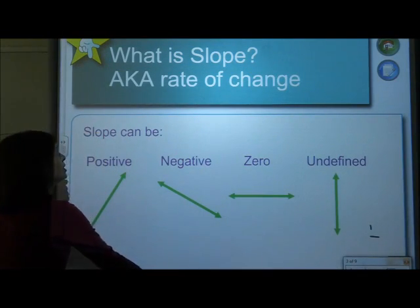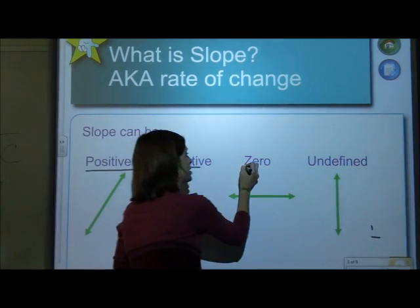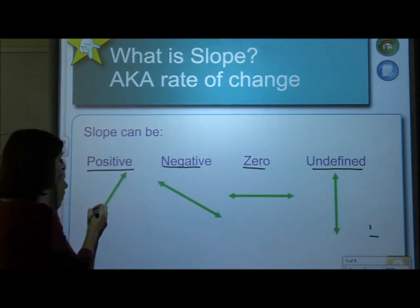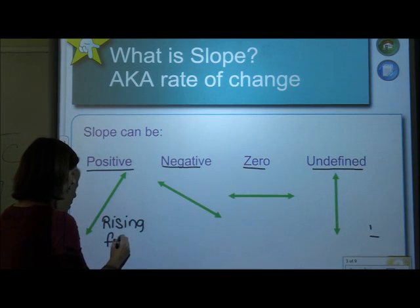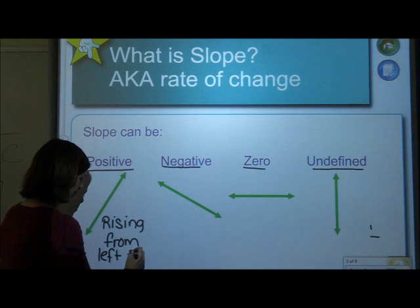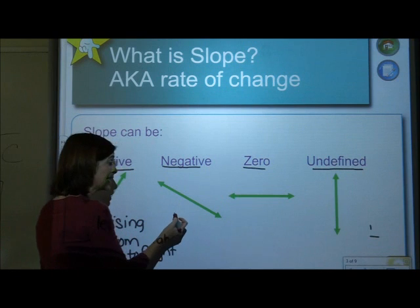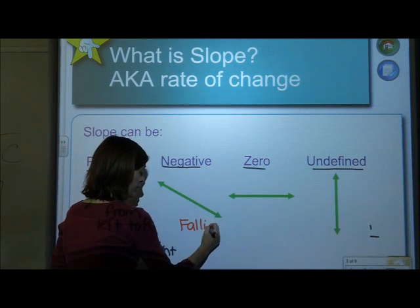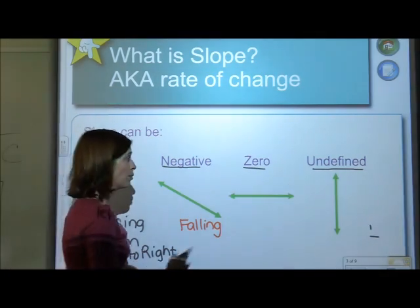All right. Again, what is slope? Slope can be positive, negative, zero, or undefined. And that's really important. A positive slope is rising from left to right. So if I'm writing, you're writing. Positive from left to right. So it's rising. If it's negative from left to right, it's falling.